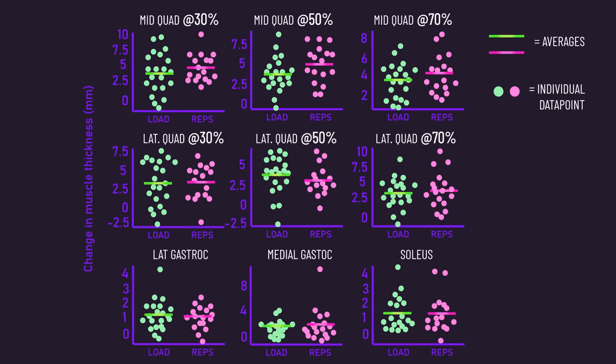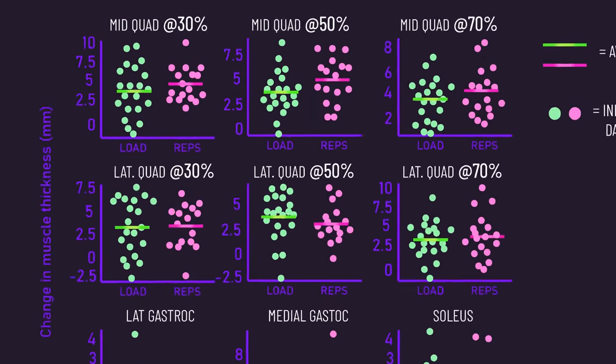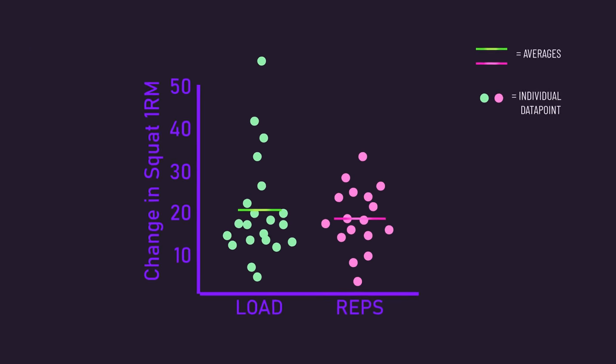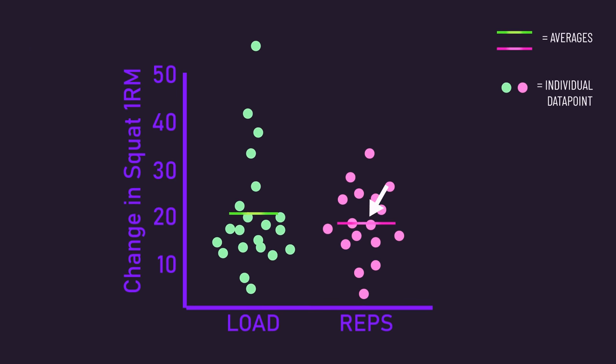Increases in virtually all muscle growth measurements were similar between the load and rep groups. Although mid-quad growth tended to slightly favor the rep group, we'll discuss potential reasons shortly. Smith machine squat strength gains were fairly similar between both groups, with the load group seeing a small 2kg greater increase versus the rep group.